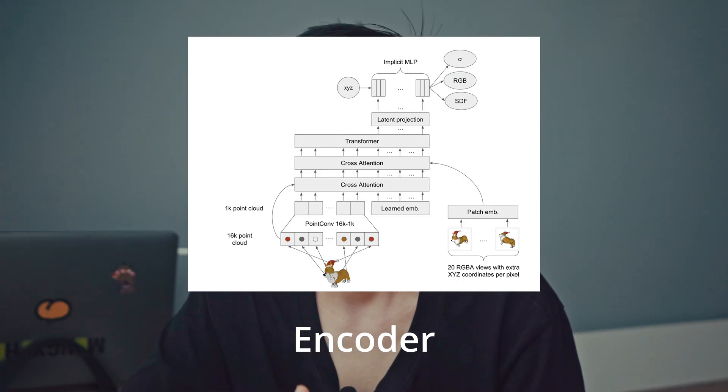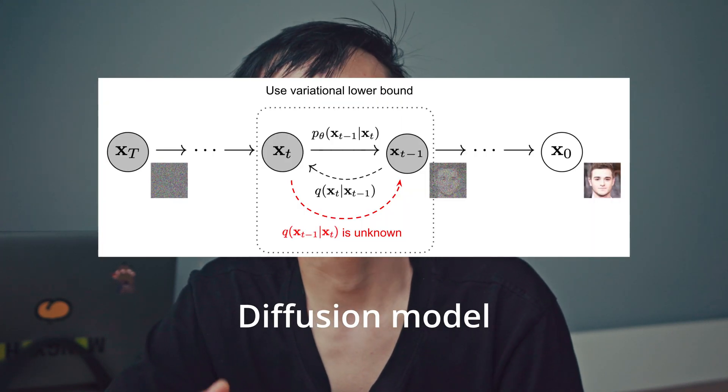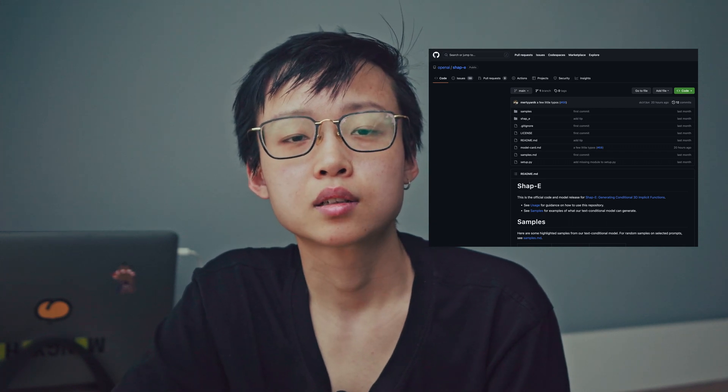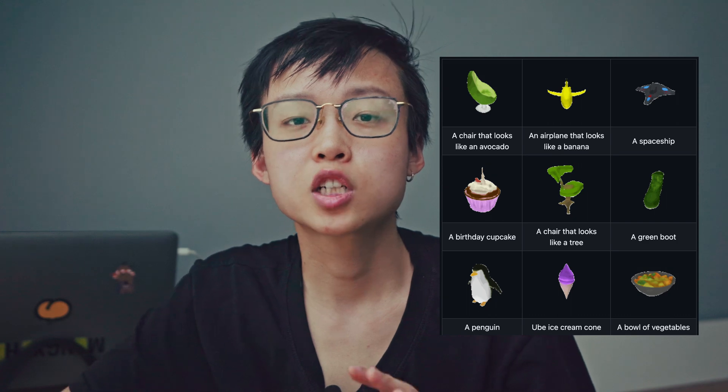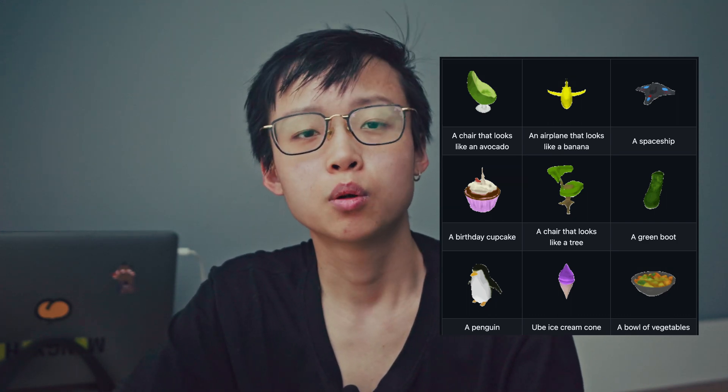The dual output capability of Shap-E allows for versatile rendering and easy integration into various 3D applications. The training of Shap-E is a two-stage process. First, a transformer-based encoder is trained to produce parameters for creating 3D assets. Then, a diffusion model is trained on these parameters. You'll find all the details about Shap-E, including model weights, source code, and examples on its GitHub page. The official paper is also available on archive.org — links in the description. On the GitHub page, some generated 3D models are provided by the researchers with the prompts they used.